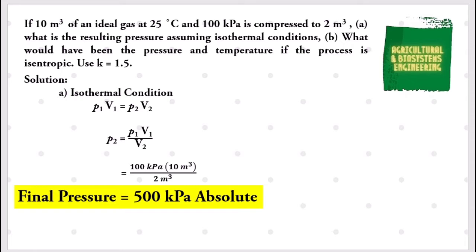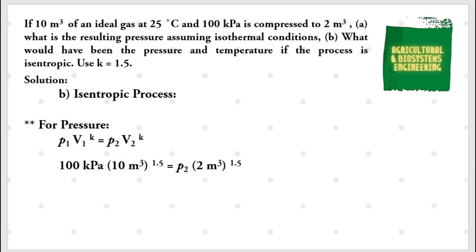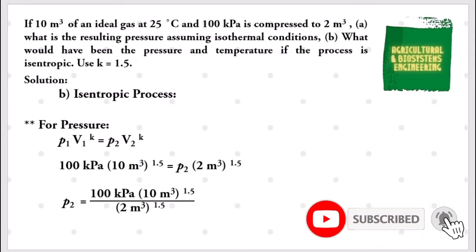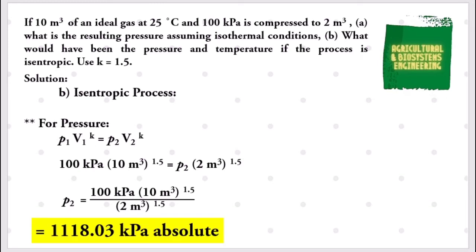Next, we proceed to solve the final pressure for isentropic process. The formula is: initial pressure multiplied by initial volume raised to the adiabatic exponent equals the final pressure multiplied by final volume raised to the adiabatic exponent. Substituting: 100 kPa times 10 cubic meters raised to 1.5, divided by 2 cubic meters raised to 1.5. Solving, the final pressure is 1118.03 kilopascals absolute.